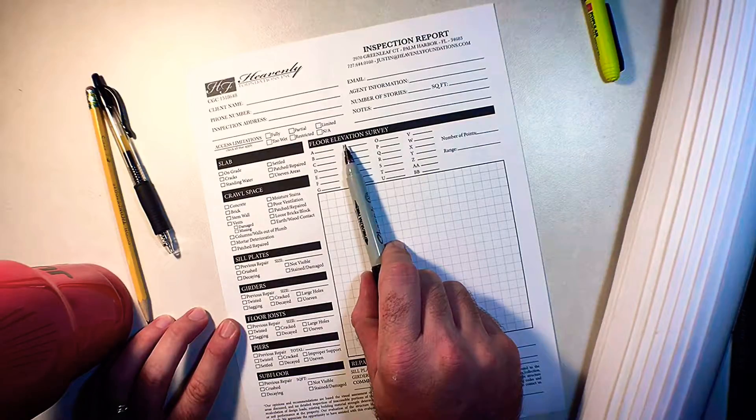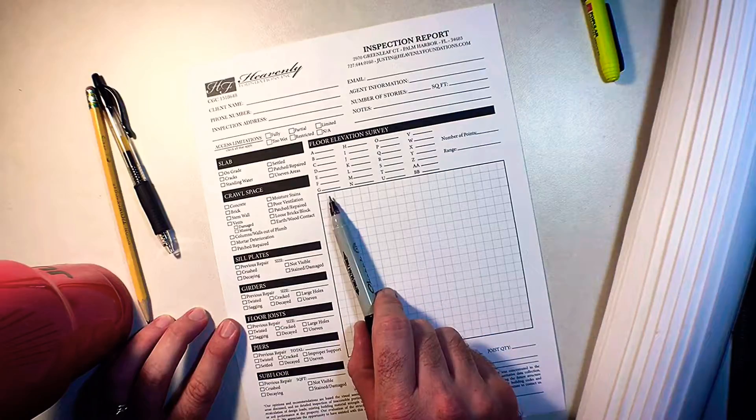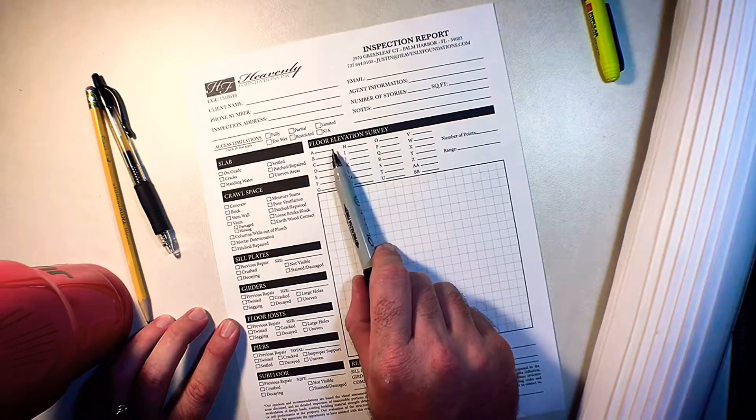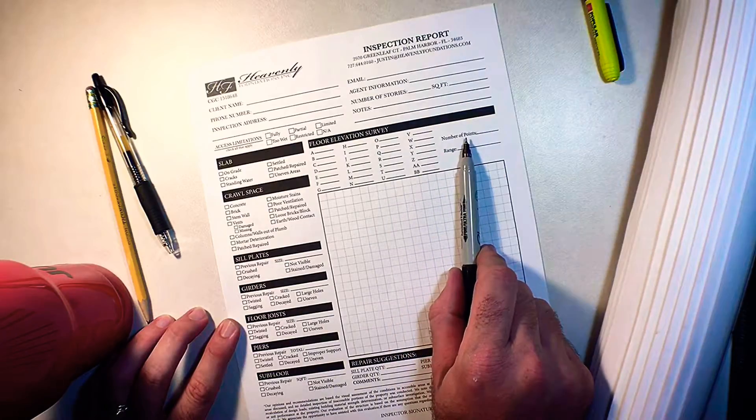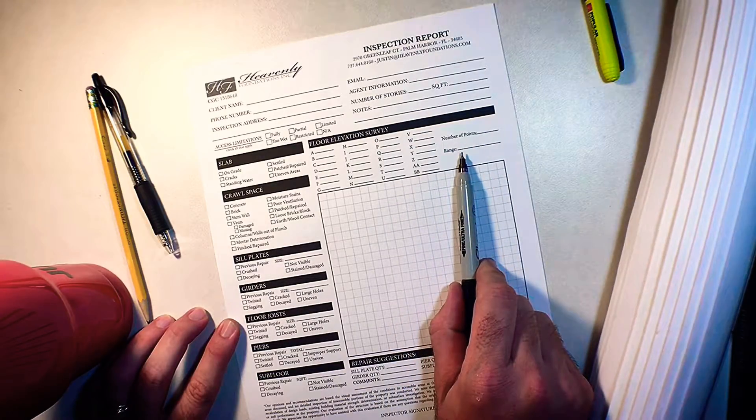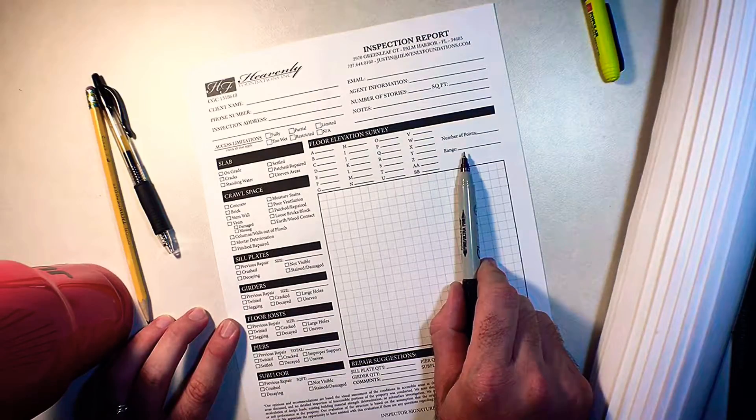Our floor elevation survey goes through your house, marking out point by point by point with a level to determine how level it is. All those points are added up and then we get a good range on how level your property is and then if there's any areas that need to be properly leveled.